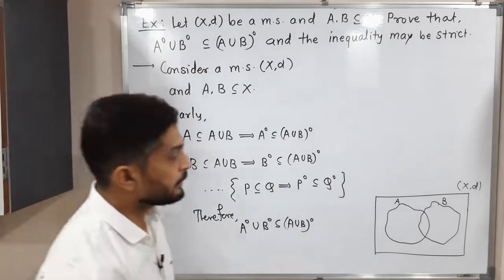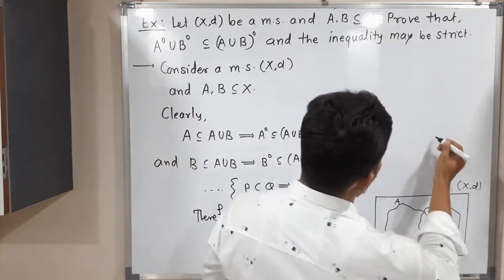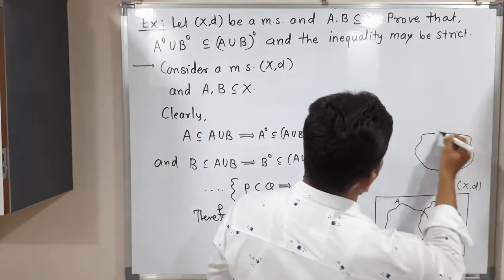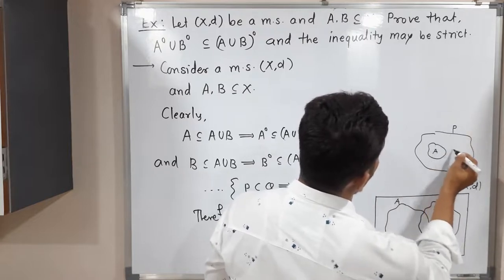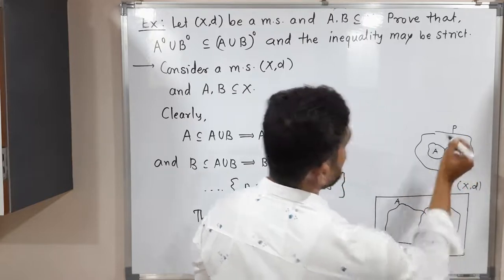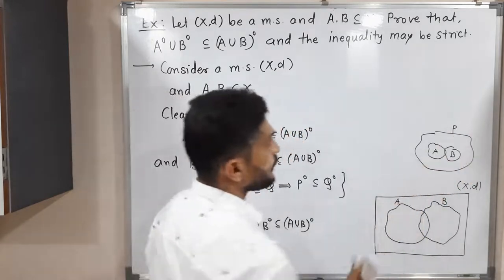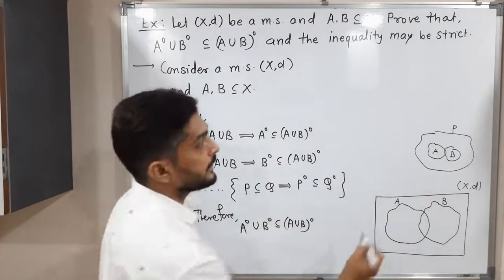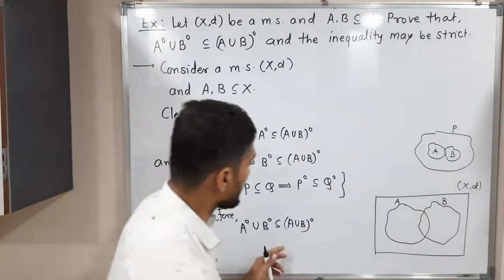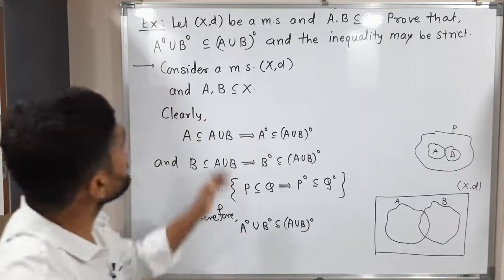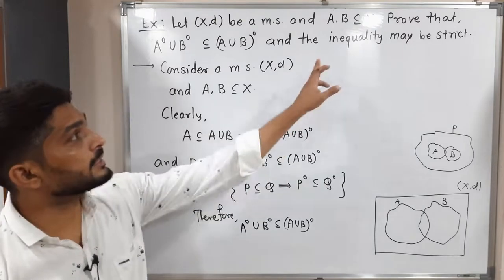Let me give a rough sketch to illustrate. Suppose we have some set P, and A and B are both subsets of P. Then their union is also a subset of P. That is why we can write that result, and in this way we have proved the inclusion.